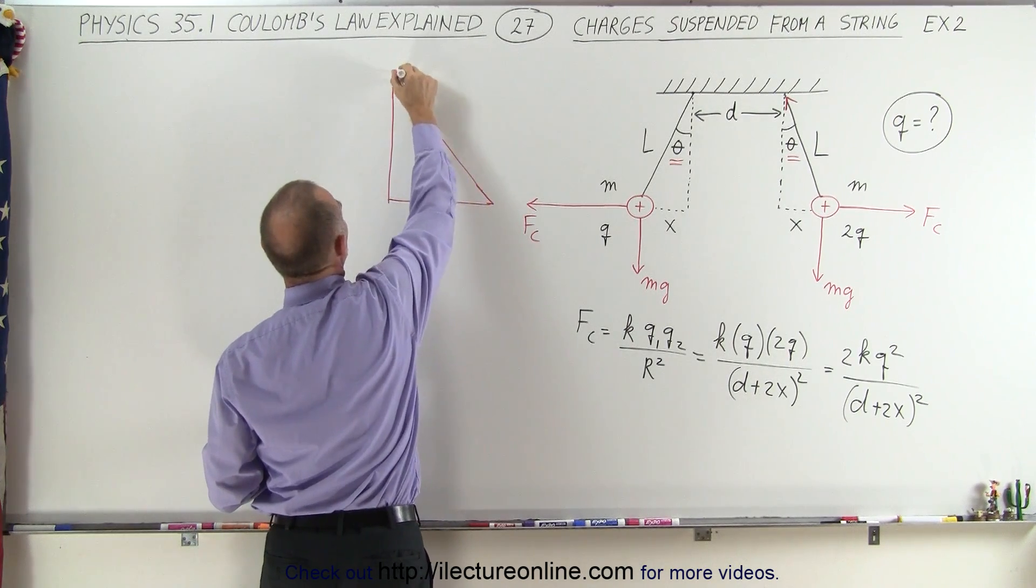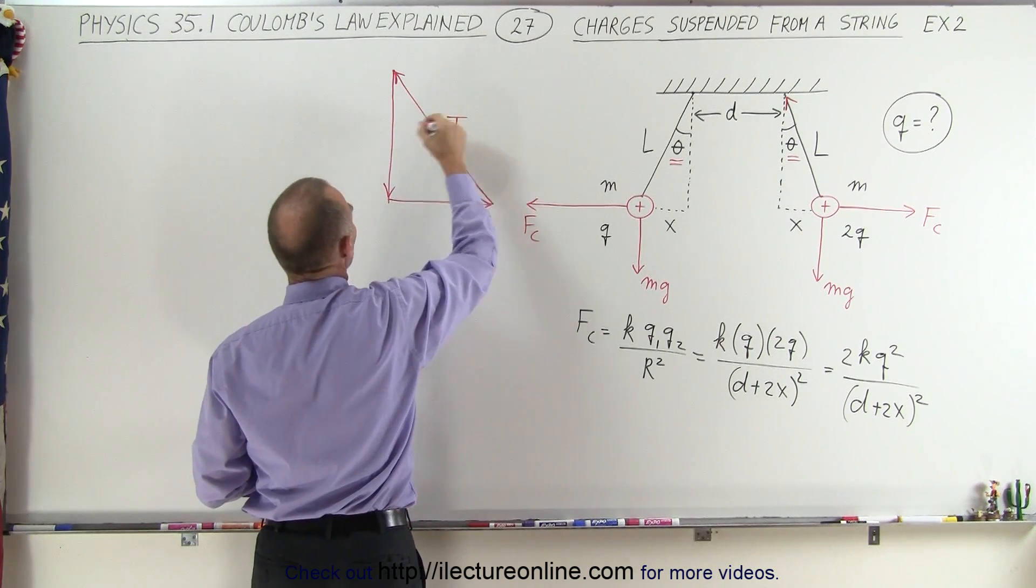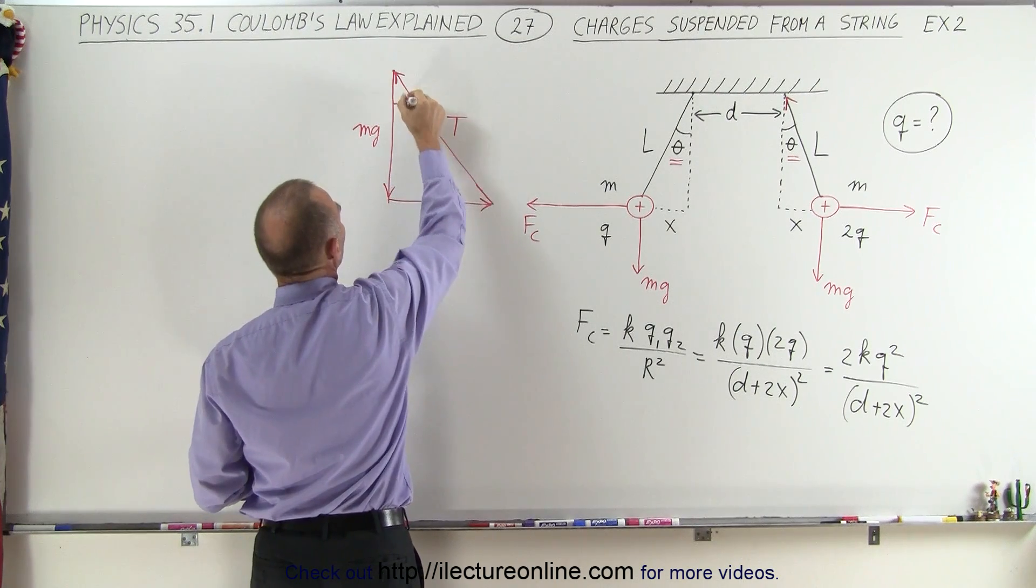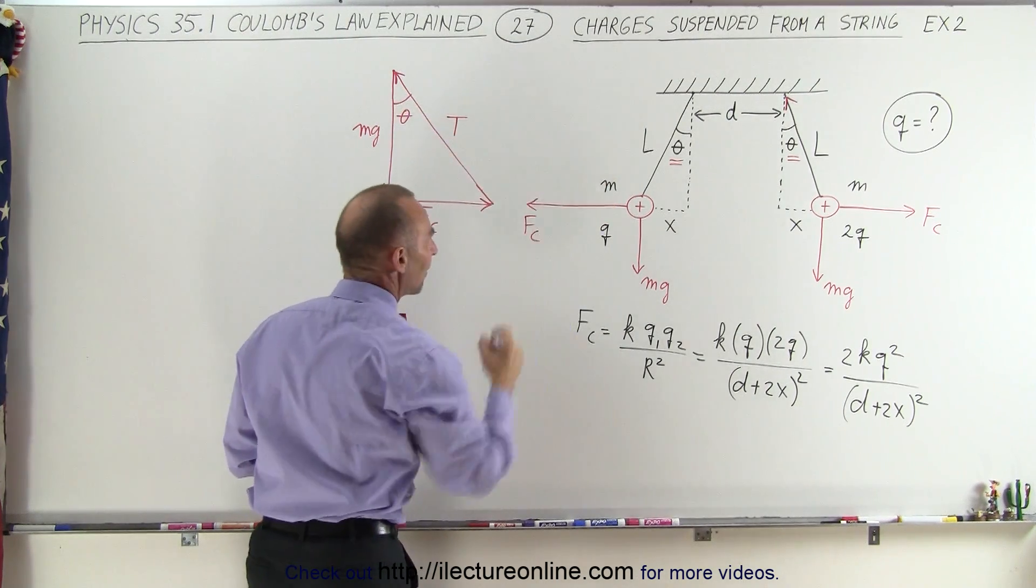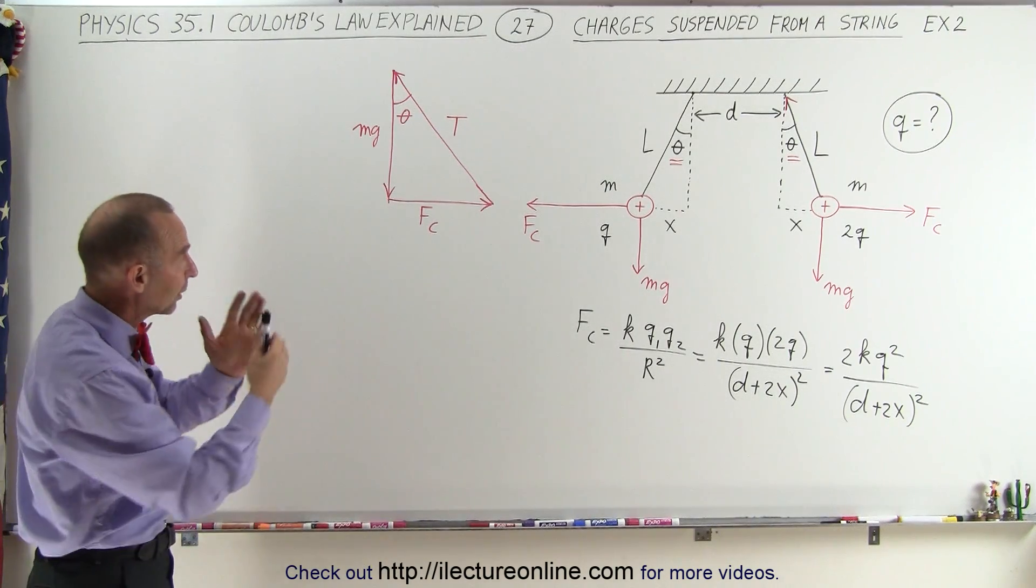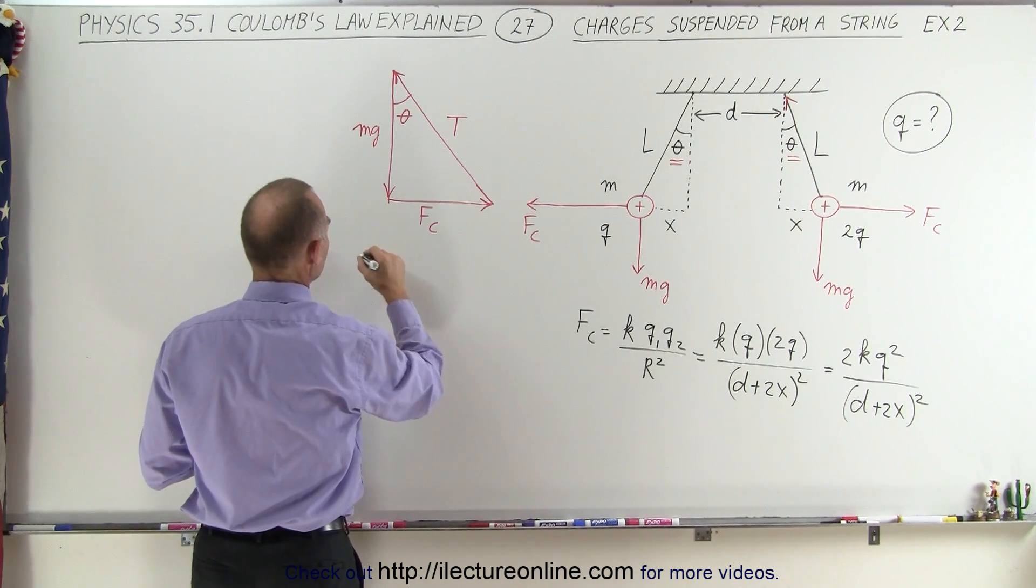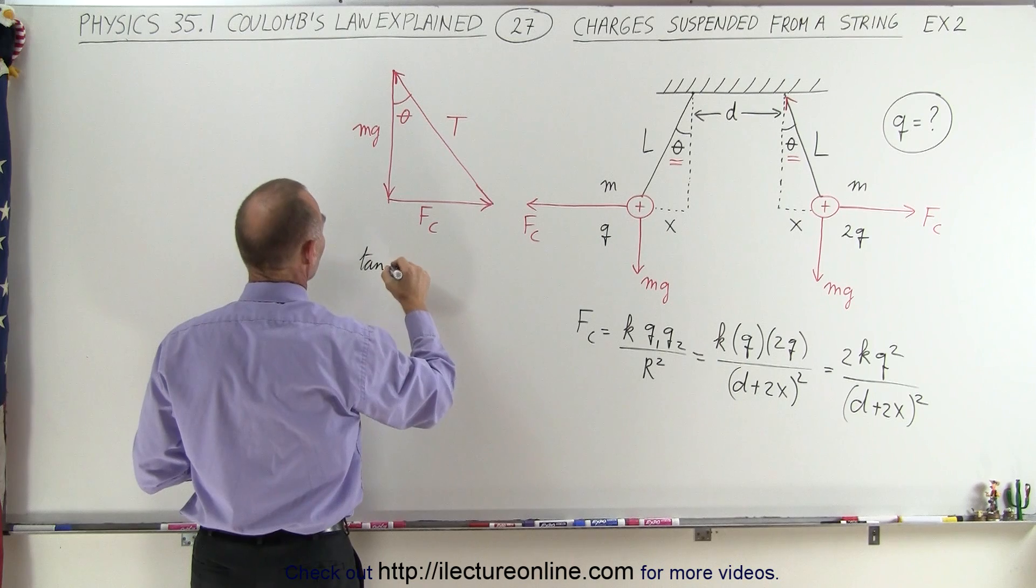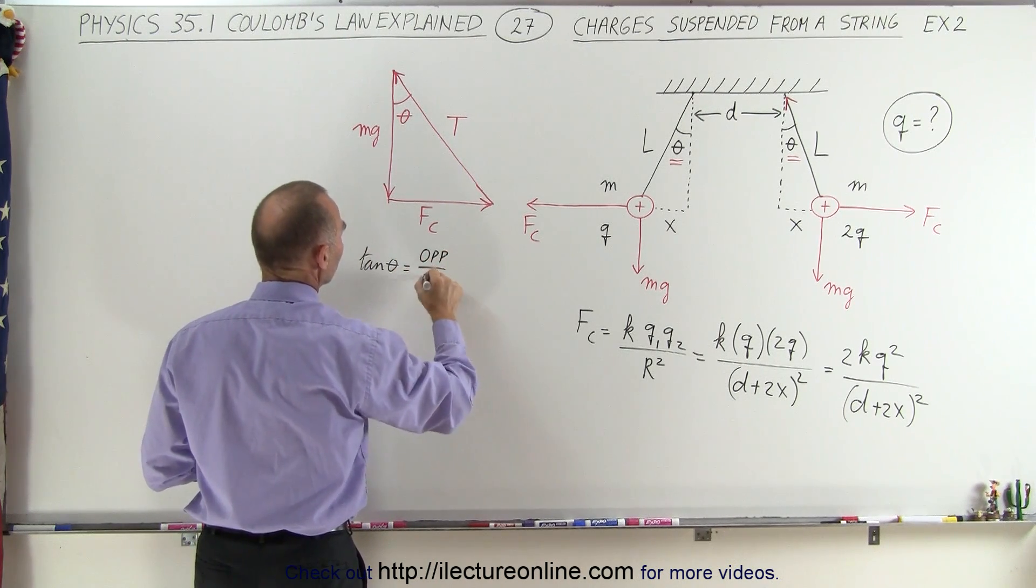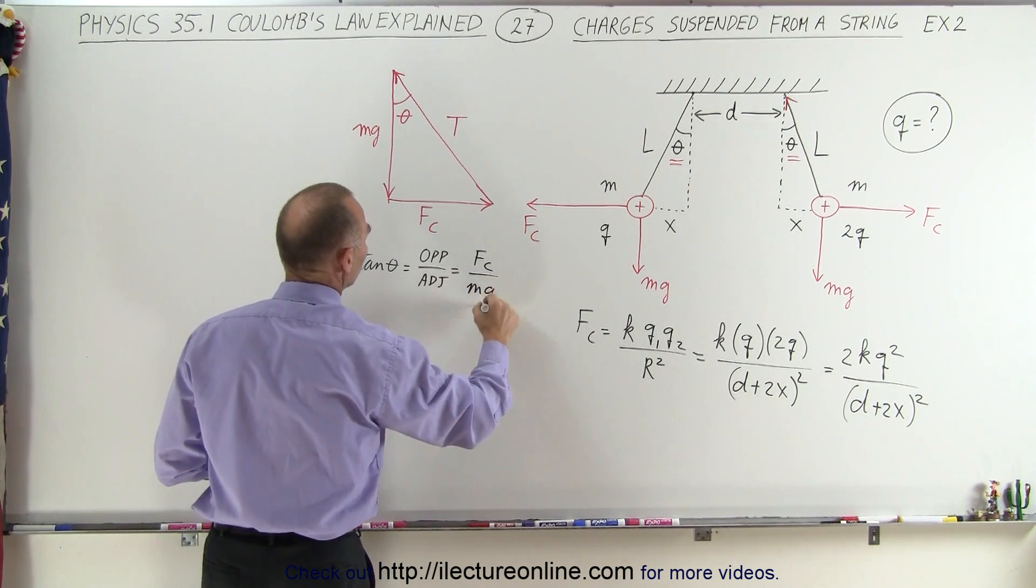So here we have the tension, here we have mg, and there we have F_C. So this is the tension in the string, this is mg, this is F_C, and this then therefore must be the angle theta, same angle that we see over there. Which means that using the tangent, we can relate those to one another. We can say that the tangent of theta is equal to the ratio of the opposite side over the adjacent side, which in this case is equal to F_C divided by mg.